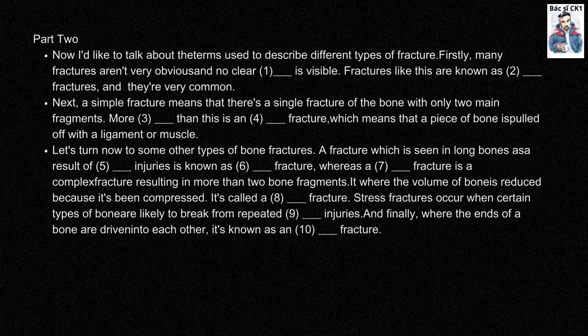A fracture which is seen in long bones as a result of twisting injuries is known as a spiral fracture, whereas a comminuted fracture is a complex fracture resulting in more than two bone fragments. Where the volume of bone is reduced because it's been compressed, it's called a crush fracture.